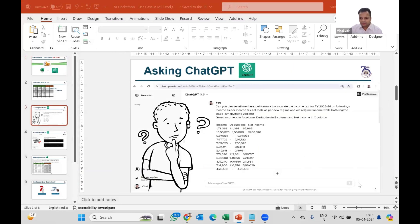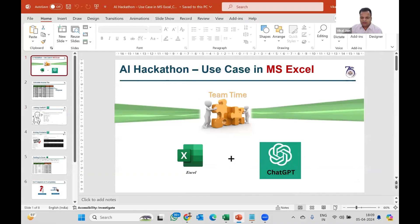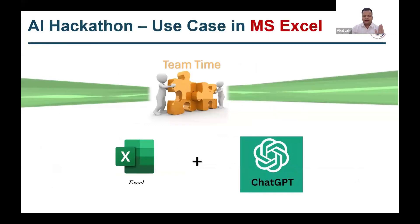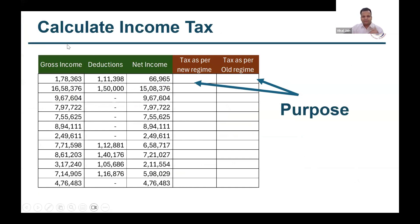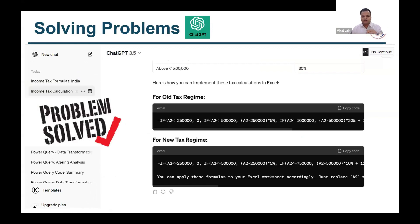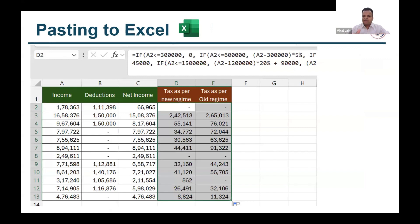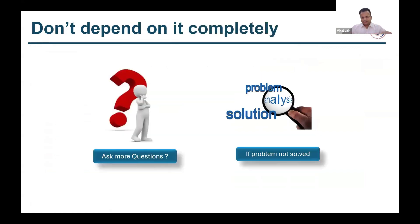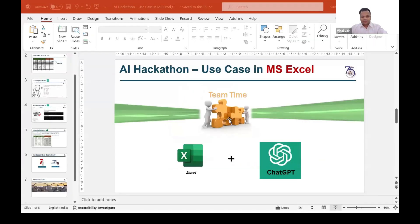What we will discuss today: we will simply calculate income tax as per the new regime and as per the old regime. I will ask ChatGPT in layman language - I don't know the code, I don't know the Excel formula. I will simply ask ChatGPT, copy the formula it gives me, paste it blindly, and then see why AI is failing and what we need to do next. Let's start with Excel.